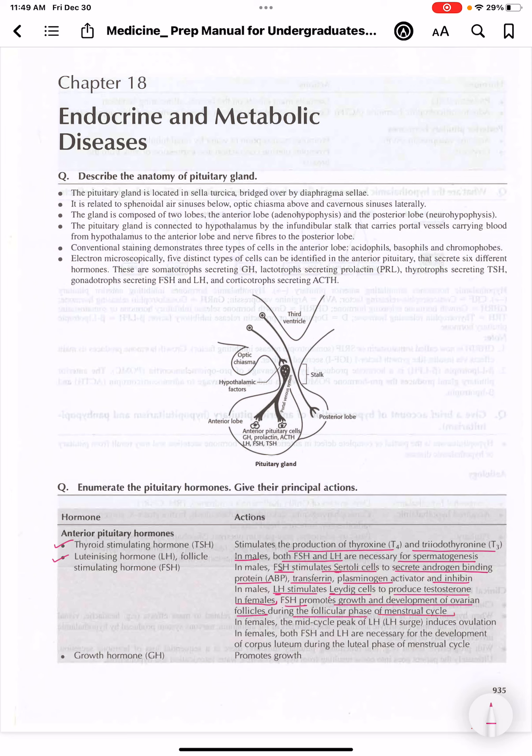In mid-cycle of the menstrual cycle, there is a peak of LH, which is also known as LH surge, which induces ovulation. In females, both FSH and LH are necessary for the development of corpus luteum during the luteal phase of menstrual cycle.